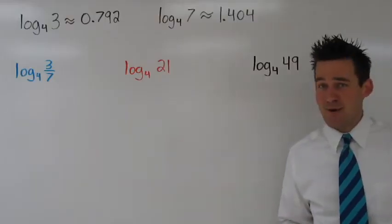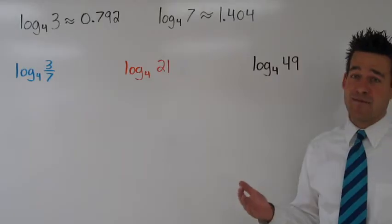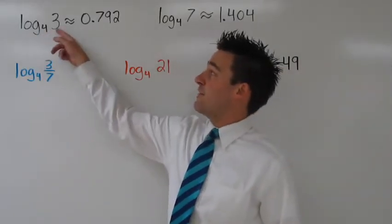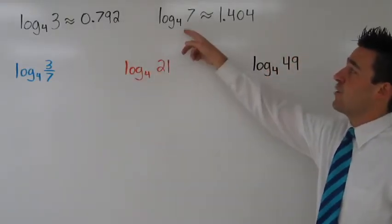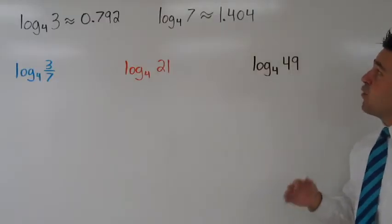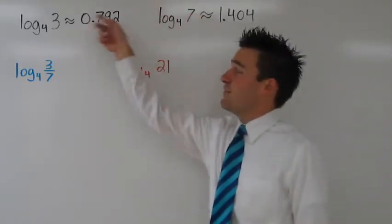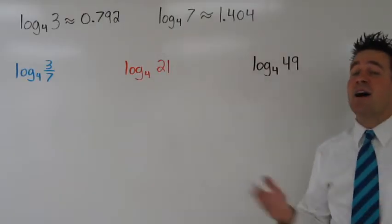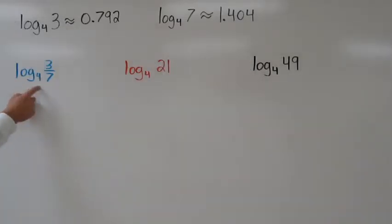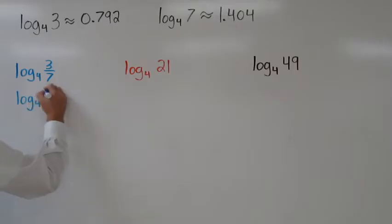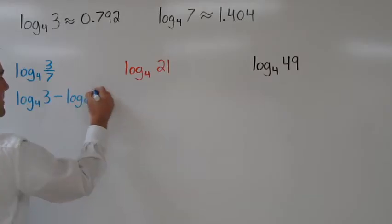But how can we use these properties? Well, let's suppose we're given two logarithm values. Log base 4 of 3 is approximately equal to 0.792, and log base 4 of 7 is approximately equal to 1.404. Given these two values, we can find tons of other values using the properties of logarithms. Let's try to find log base 4 of 3 sevenths. Here we can use the quotient property to rewrite this as log base 4 of 3 minus log base 4 of 7.